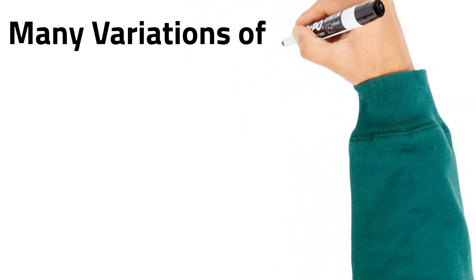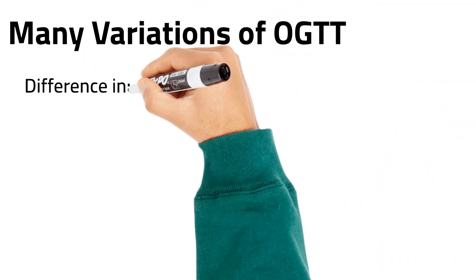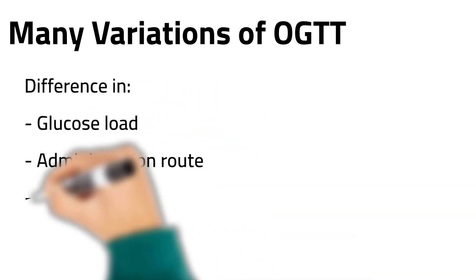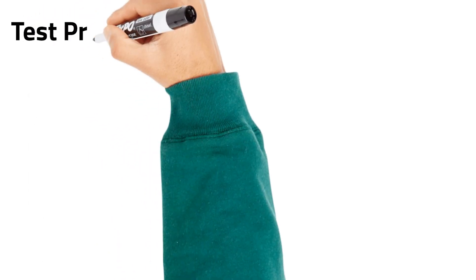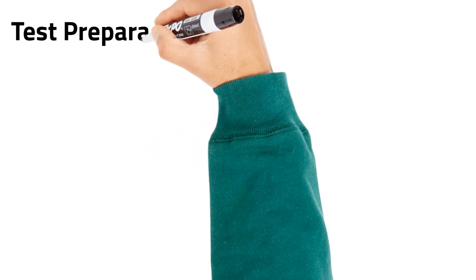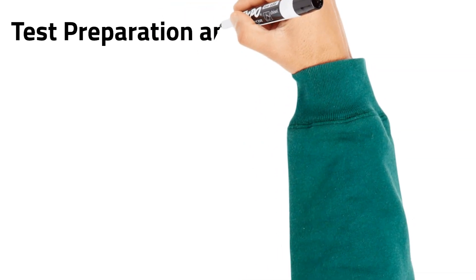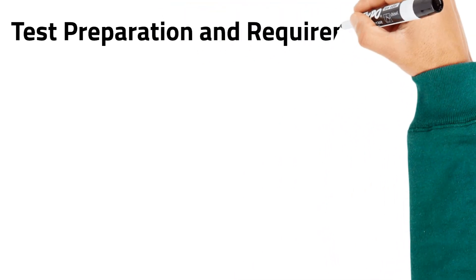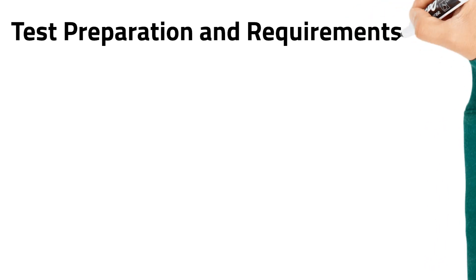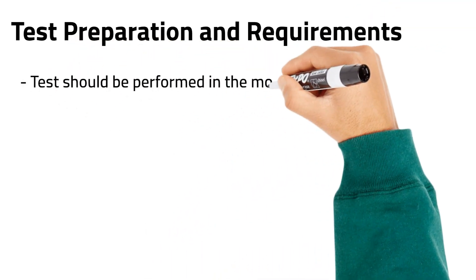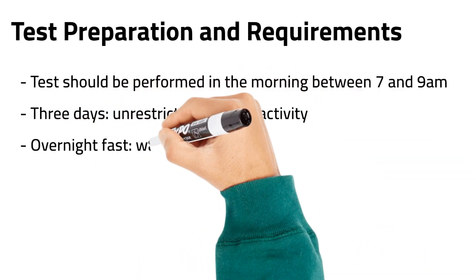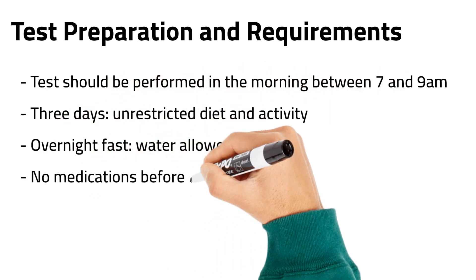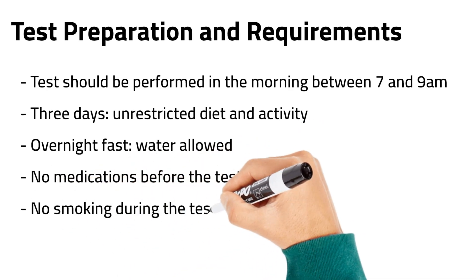There are many variations of the glucose tolerance test depending on the intended purpose, with differences in the dosage of glucose load, administration route, sampling intervals, and measurements of other analytes in addition to glucose. The test should be performed in the morning between 7am and 9am after an overnight fast and 3 days of unrestricted diet and activity. Water is allowed during the fasting period. Medications known to affect glucose metabolism should be discontinued, if possible, prior to the test, and patients should not smoke cigarettes during the procedure.